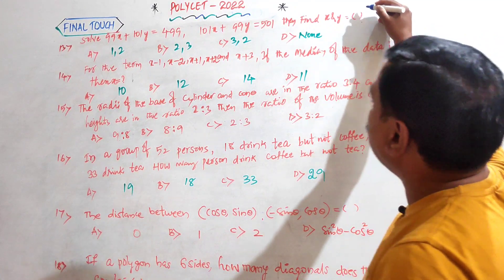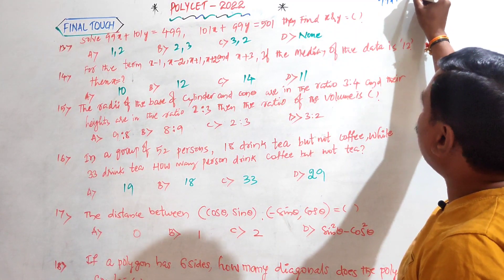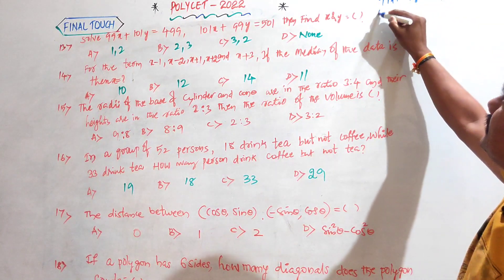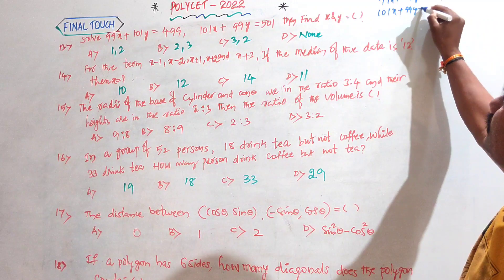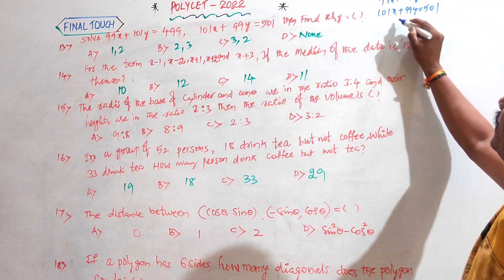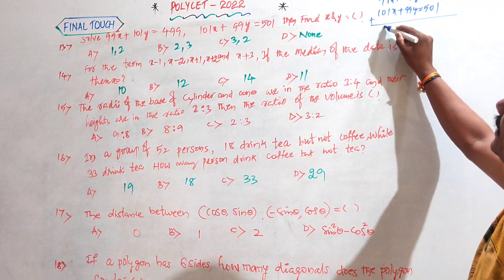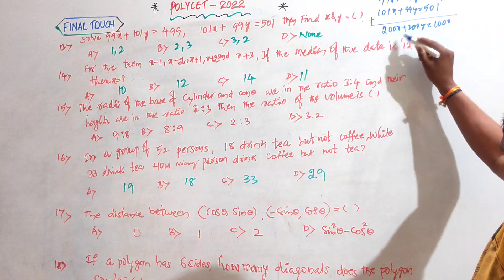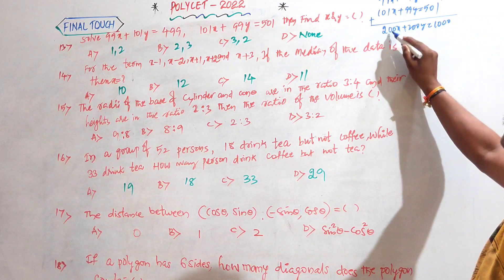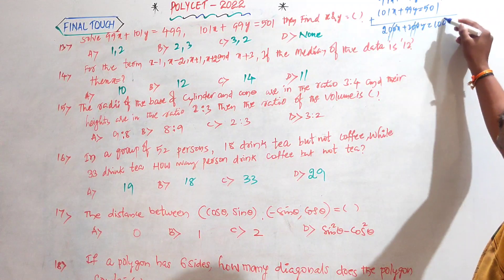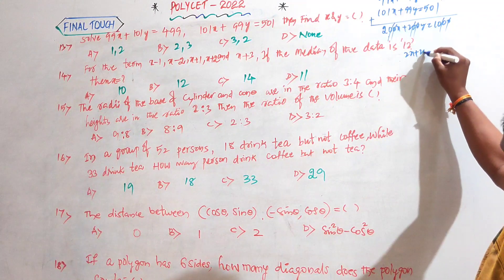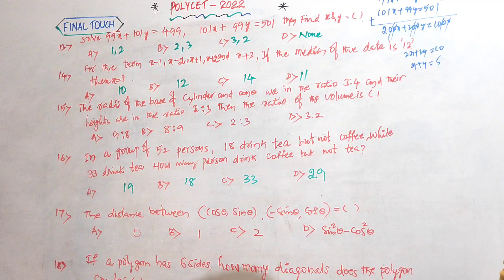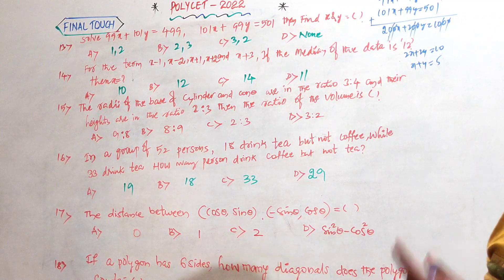99x + 101y = 499 and 101x + 99y = 591. Adding these two equations we get 200x + 200y = 1000. Taking 200 as common, we cancel and get 2x + 2y = 10, so x + y = 5.